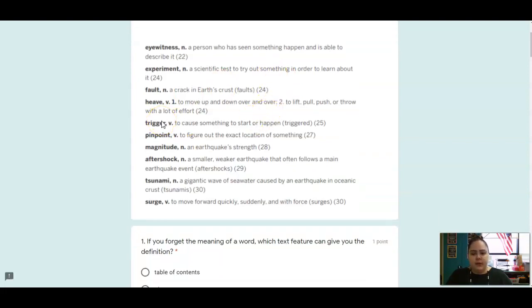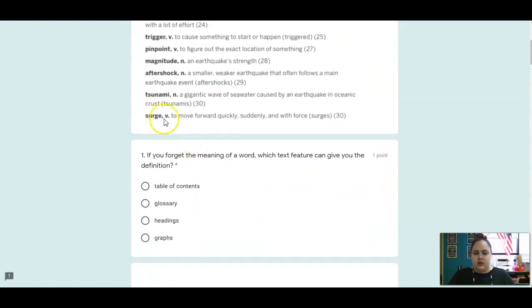Trigger is a verb, to cause something to start or happen. Pinpoint is a verb, to figure out the exact location of something. Magnitude is a noun, an earthquake's strength. Aftershock are smaller, weaker earthquakes that follow the main earthquake. A tsunami is a noun, a gigantic wave of seawater caused by an earthquake in the oceanic crust. And surge is a verb, which means to move forward quickly, suddenly, and with force.